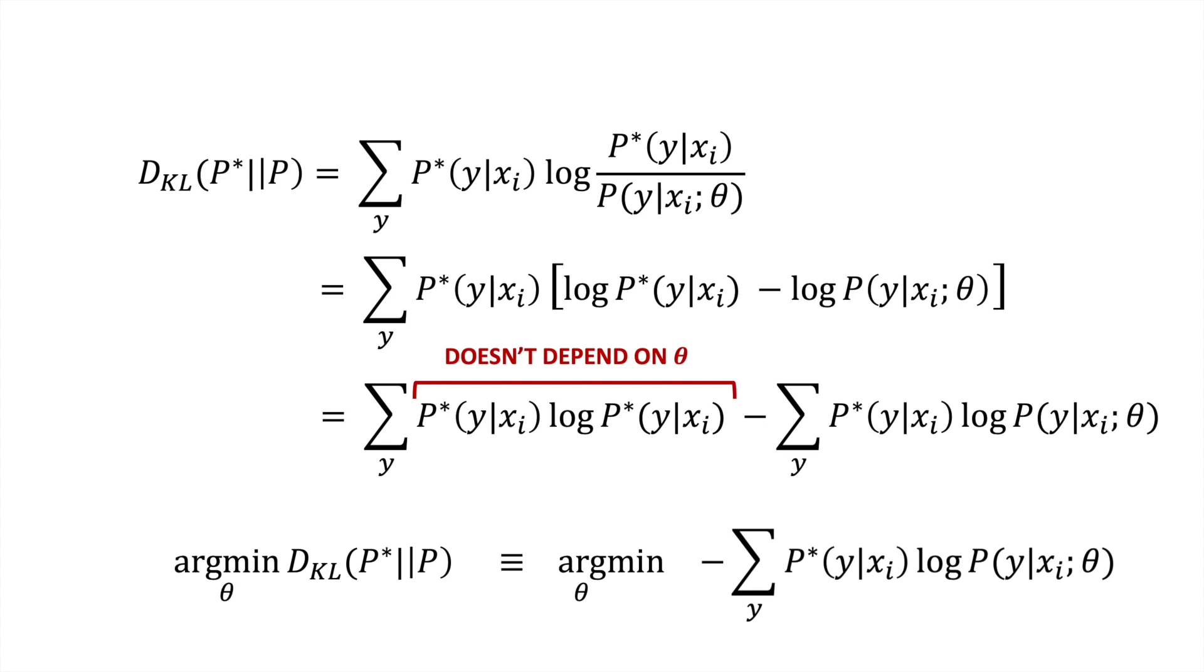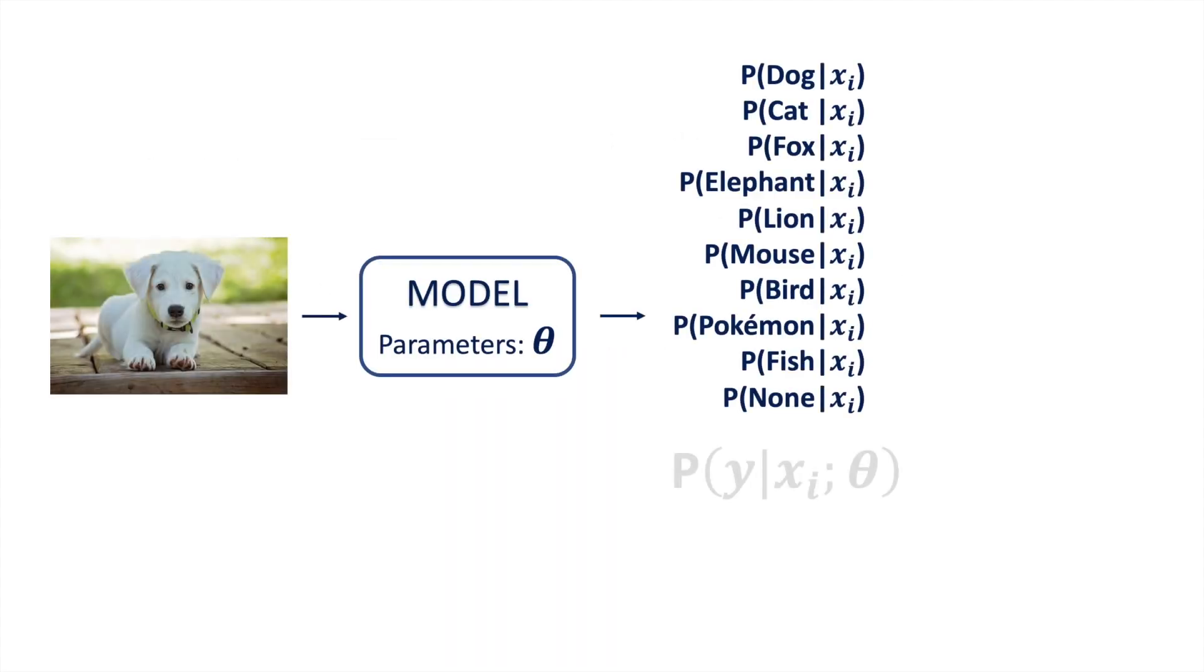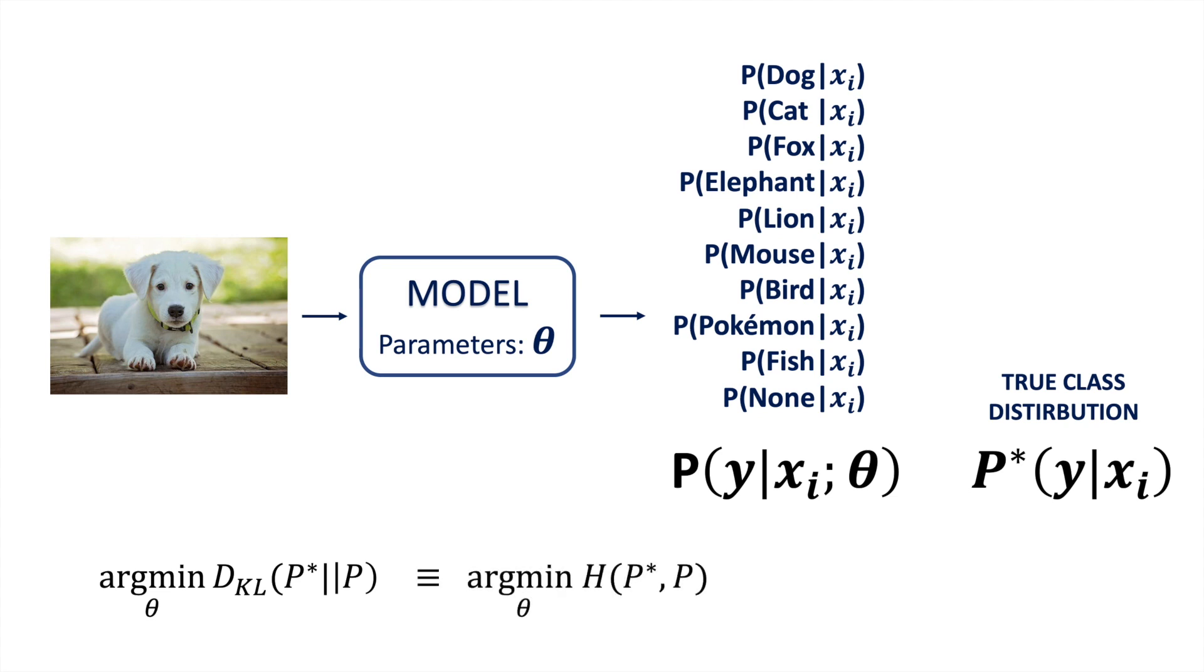So to quickly summarize, in this classification setup, our network is implicitly modeling the output probabilities over all classes. A natural loss function would then be to minimize the KL divergence between the modeled and the true distribution, but minimizing the cross entropy loss is equivalent to minimizing the KL loss, and since the cross entropy loss has a simpler form, it has become the standard classification loss.